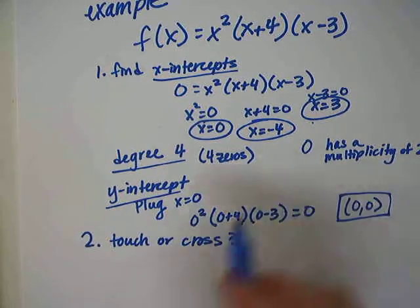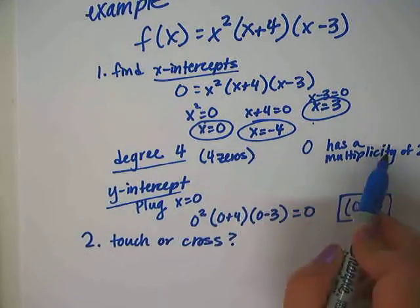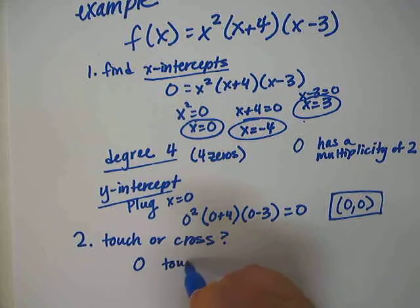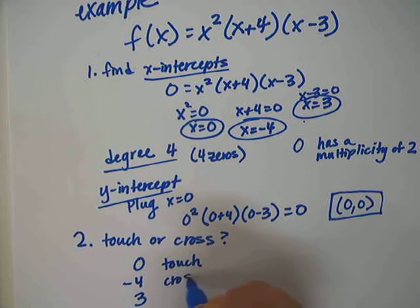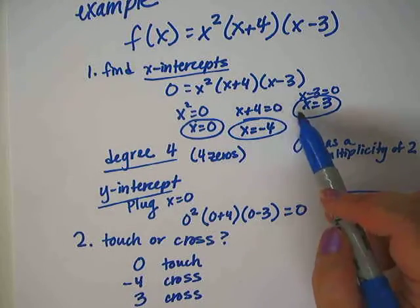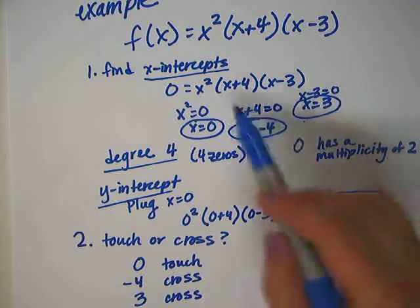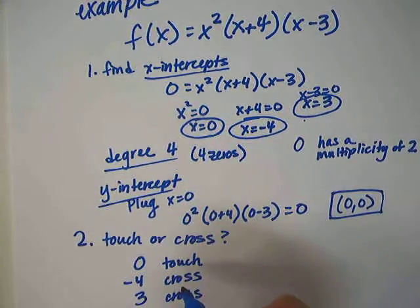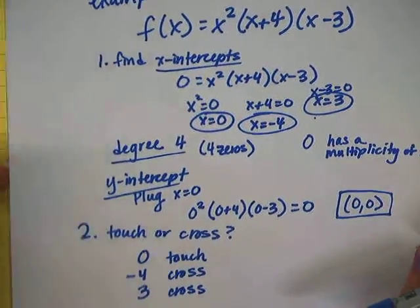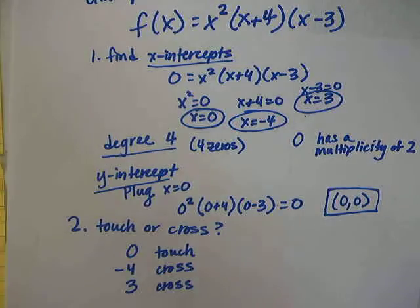The next question is: does the graph touch or cross at each x-intercept? We talked about how 0 has a multiplicity of 2, so at 0 it's going to touch. But at negative 4 and at positive 3, it's going to cross, because at those points we have an odd multiplicity — a multiplicity of 1 is odd, so it crosses.